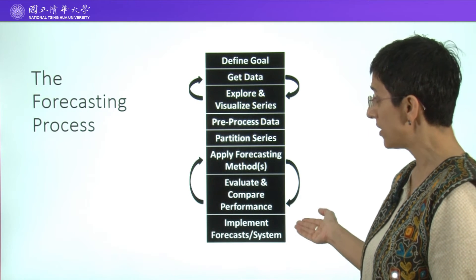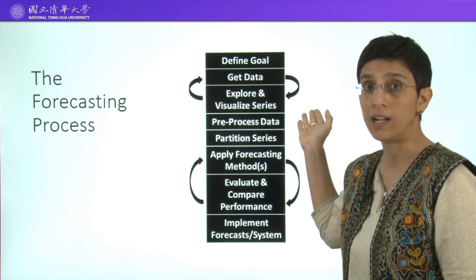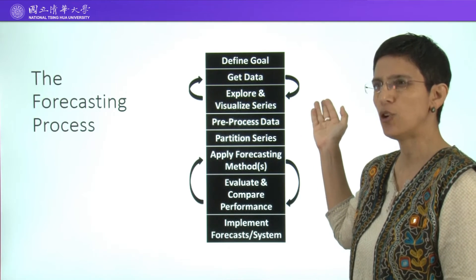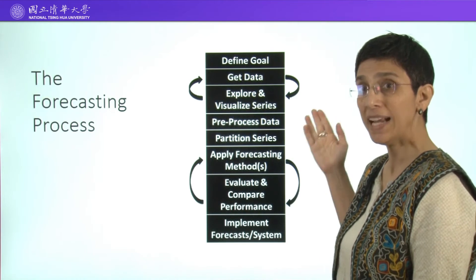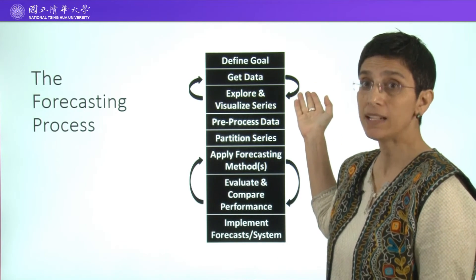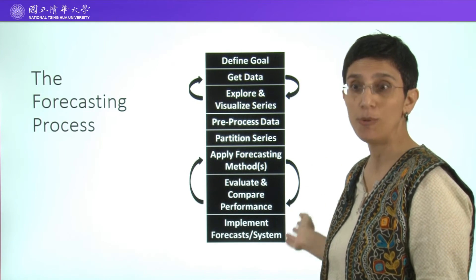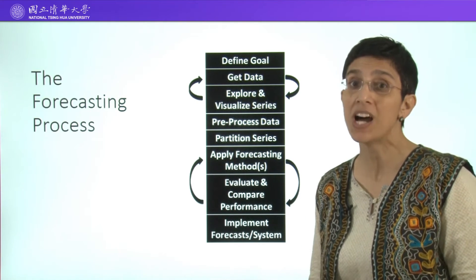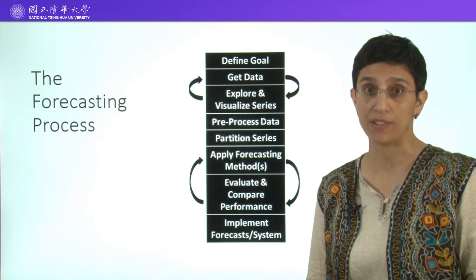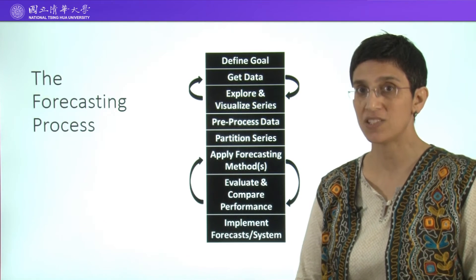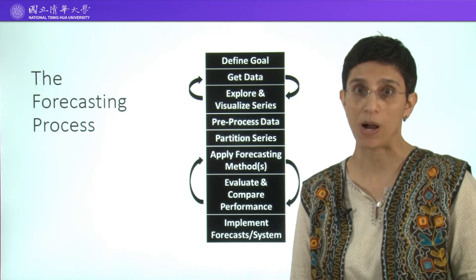Notice that some steps can actually go back. For example, when we explore the data, we might determine that we don't have the right data to solve the problem that we're trying to answer — in that case, we might go back and collect new data. Or maybe when we're comparing our models, we determine that all the models we tried are not good enough, and in that case we might go back and try some new methods. So remember, forecasting is an entire process, and we're going to be talking about all these different steps throughout the course.